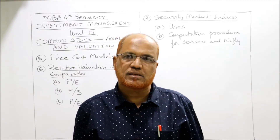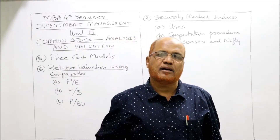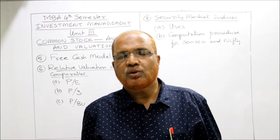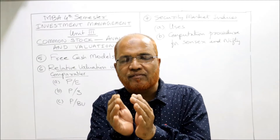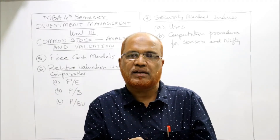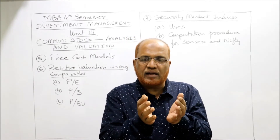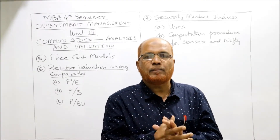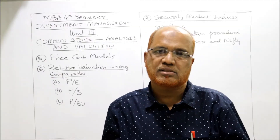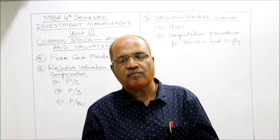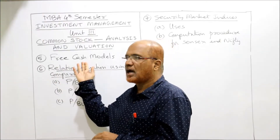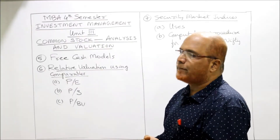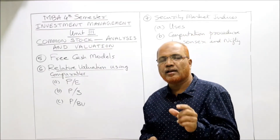By calculating the present value of all those cash flows, we find the value of the enterprise. From this enterprise value we deduct the preference capital and debt capital (debentures and bonds), then divide by the number of equity shares to get the intrinsic value of equity shares. This is the Free Cash Model. The next model is relative valuation using comparables.